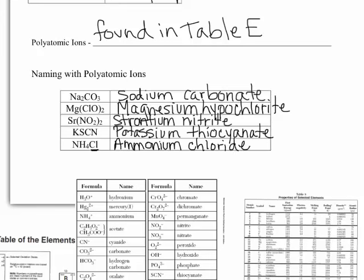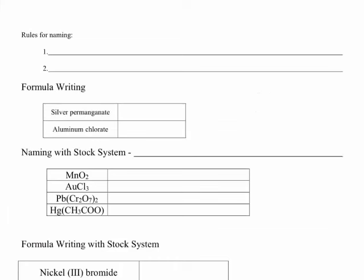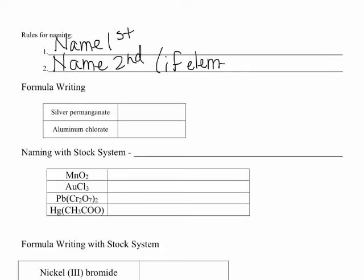That's all there is to naming polyatomics. If I had to write rules for naming things with polyatomic ions: name the first — the first thing might be a polyatomic ion or it might be an element. Depending on which you're naming, you would either need table E at that point, or just use table S to come up with a name from the symbol. Then name the second. The second thing might be the polyatomic ion — if not, if it's an element, you're going to need to change the ending to IDE. If it's polyatomic, you don't change the endings, they stay the way they are.